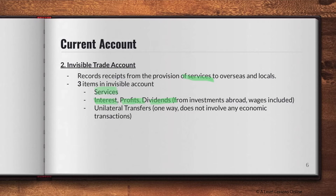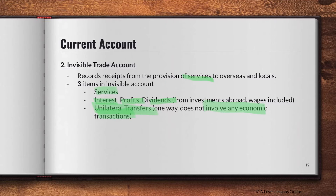The second item is interest, profits, and dividends from investments abroad. If people are trading your stocks or there are bonds incurring interest going into your economy, this comes under the invisible trade account. The third item is unilateral transfers — these are one-way transfers that do not involve an economic transaction in return. For example, a friend in Spain transferring money to you in Africa is a unilateral transfer, registered under the invisible trade account.